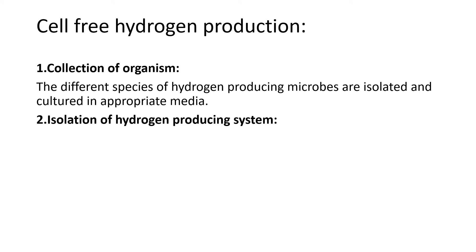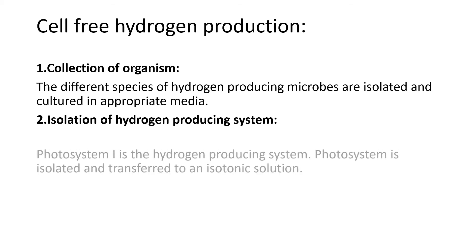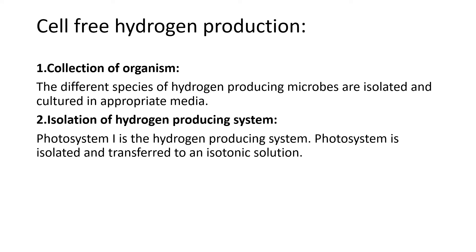The next step is isolation of the hydrogen producing system. Hydrogen production occurs in photosynthetic organisms within photosystems. An isotonic solution is used - a medium where the concentration of salts is the same inside and outside the cell - to maintain cell stability.